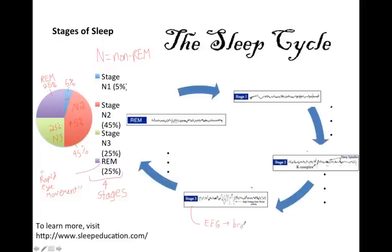Brain wave patterns are different for each stage, and the graphs of the brain's electrical activity are called EEGs. Each graph is a measurement of the electrical activity of different parts of the brain at different times.